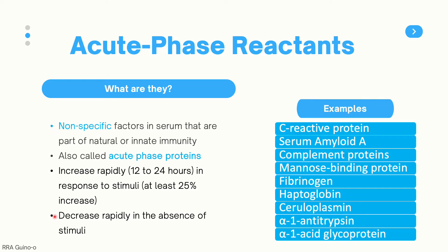Here are some notable examples of acute phase reactants: C-reactive protein, serum amyloid A, complement proteins, mannose binding protein, fibrinogen, haptoglobin, ceruloplasmin, alpha-1-antitrypsin, and alpha-1-acid glycoprotein.